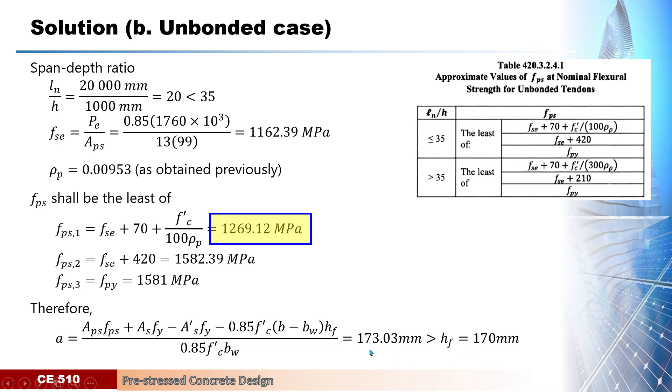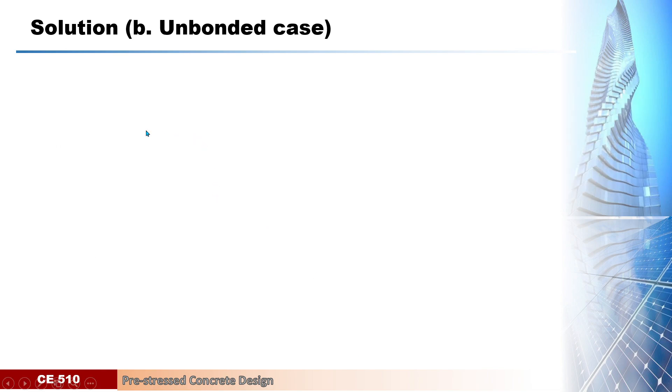So we don't need to revise this value, and this is now the true value of a. Knowing now the value of a, then we can calculate the nominal moment capacity of the beam by this formula which was used the same as of letter A, assuming a flange section, Aps, FPS, and so on and so forth.